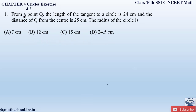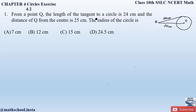By reading the question, let us draw the figure. We have a point Q, and from point Q the length of the tangent to a circle is 24 centimeters. Let the center of the circle be O. The distance of Q from the center O is given as 25 centimeters. We need to find the radius of the circle.